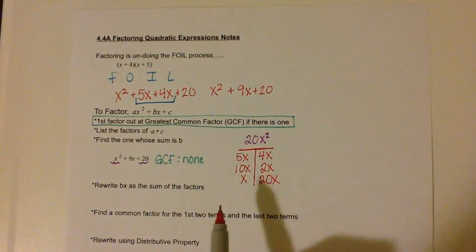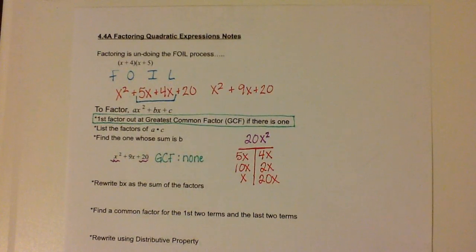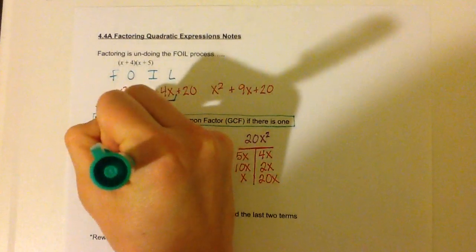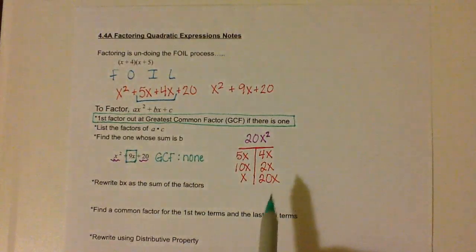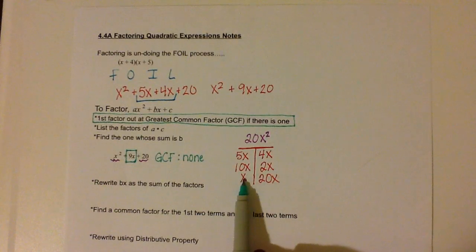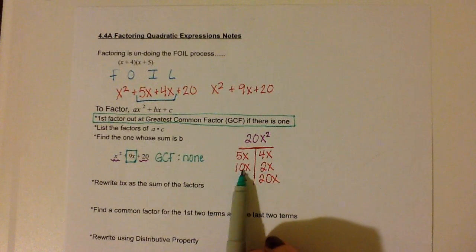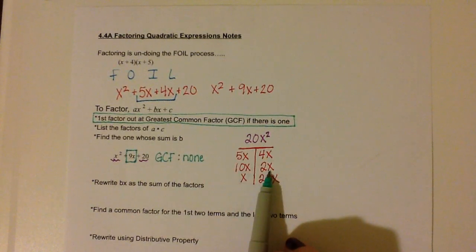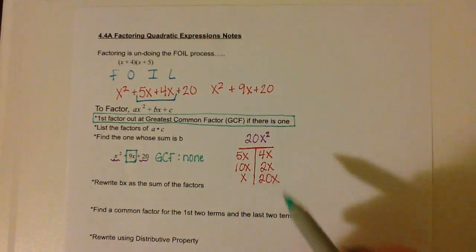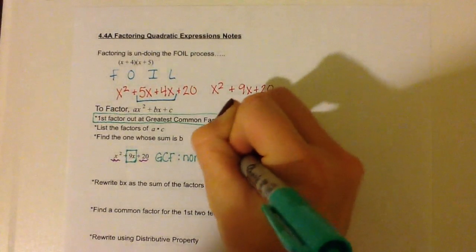But we want the one that has a sum of b. If 9x is our b, which one of these would add together to be 9x? Well, x plus 20x would be 21x — not 9x. 10x plus 2x would be 12x — not 9x. What about 5x plus 4x? That is 9x.